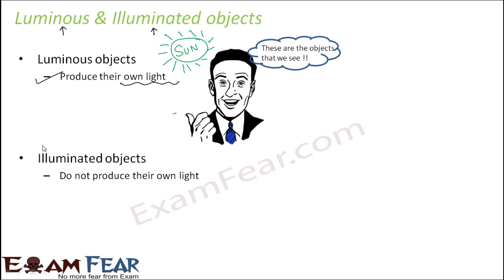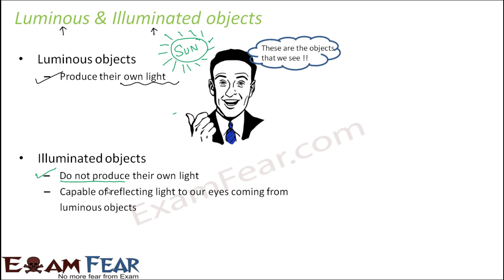The second category is illuminated objects. These objects do not produce their own light. You might ask: when these objects are not producing their own light, how can we see them? Because in the absence of light we do not see. But these objects have a special property — they are capable of reflecting light from luminous objects to our eyes.